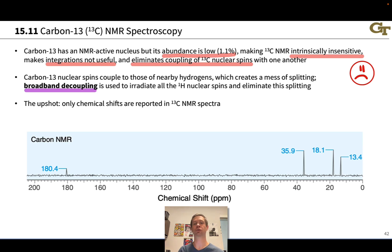We use a technique called broadband decoupling in taking carbon NMR spectra that eliminates this coupling of hydrogens with carbons. Essentially, all of the proton nuclear spins are irradiated with light that excites them and eliminates the splitting of each carbon signal as a result. Because we don't see coupling in carbon-13 NMR spectra and the integrations are not useful, only chemical shifts are reported in carbon-13 NMR spectra.